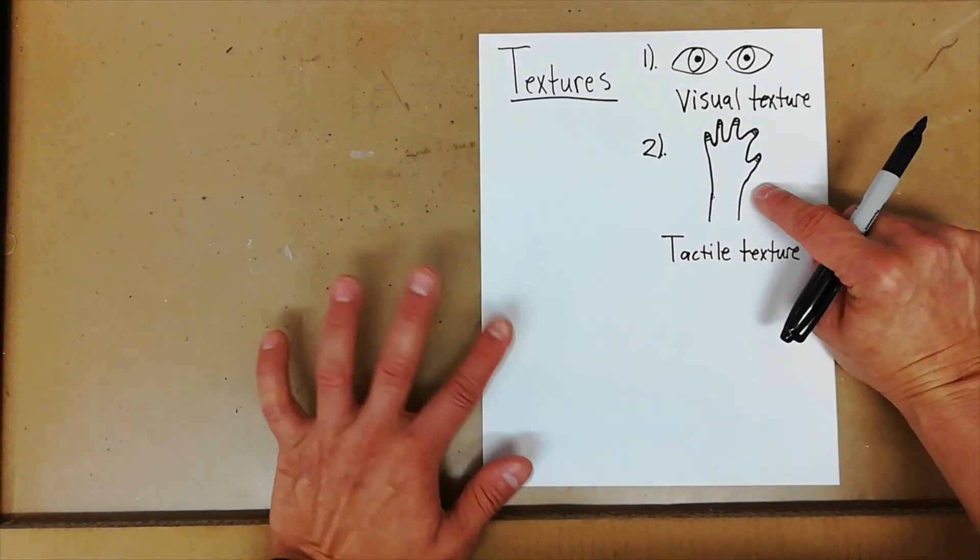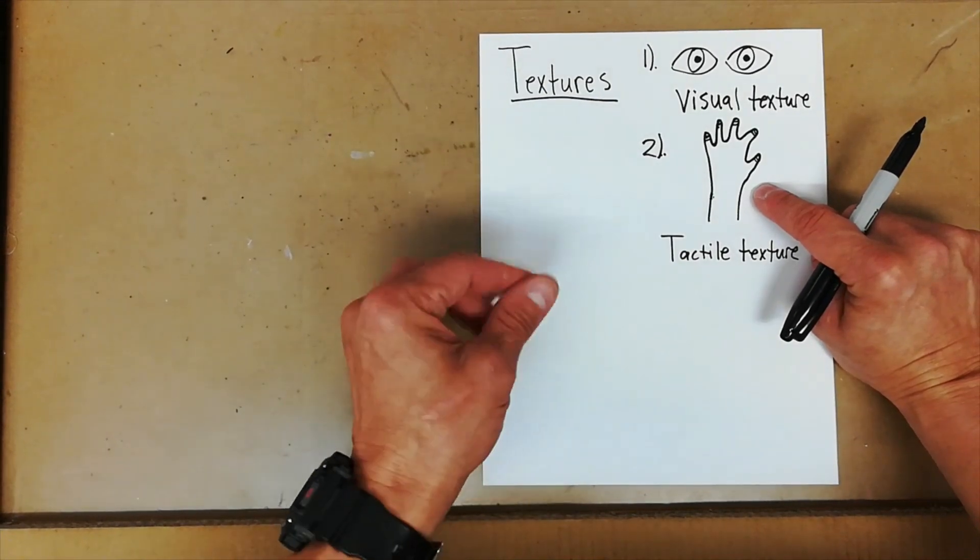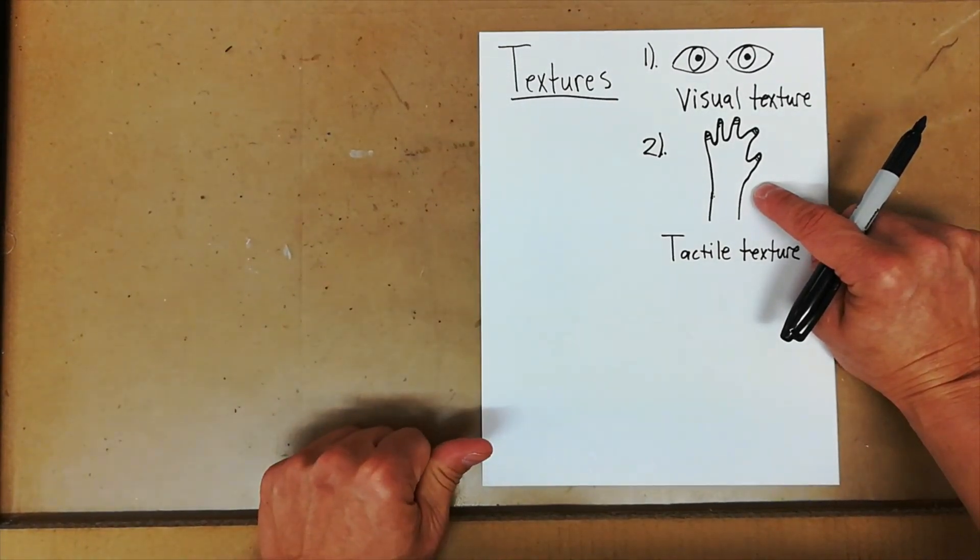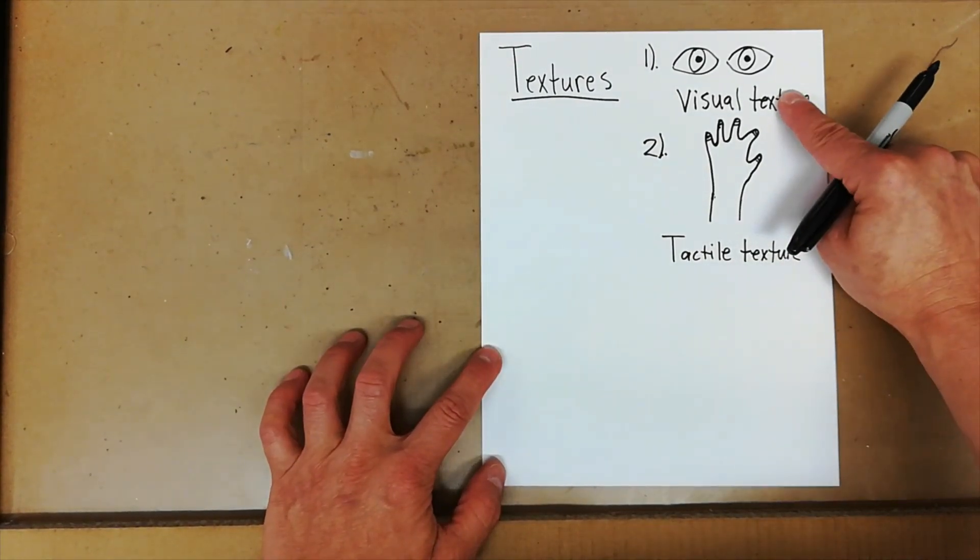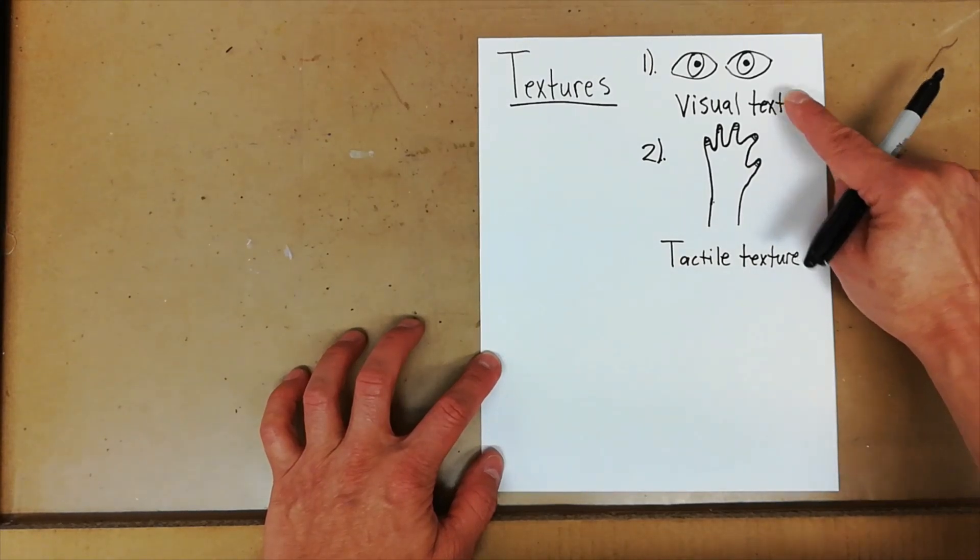Tactile texture. Tactile texture, you can feel the object like a dog. If you touched a real dog, you can feel its fur. So visual texture is texture we can only see. We can't touch it. Tactile texture we can see and touch.